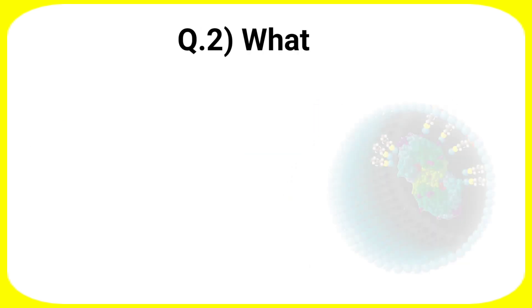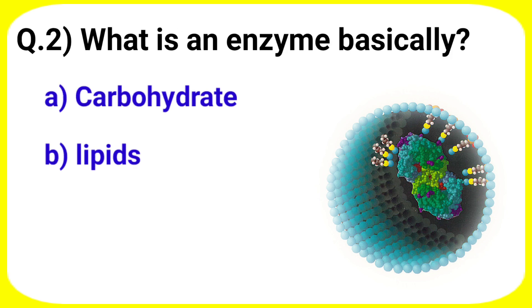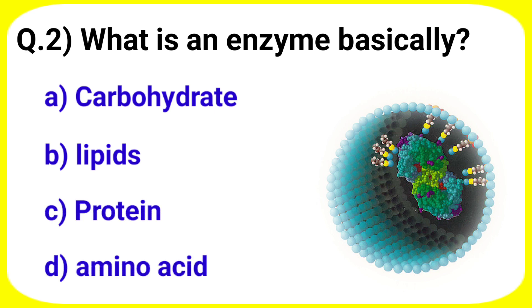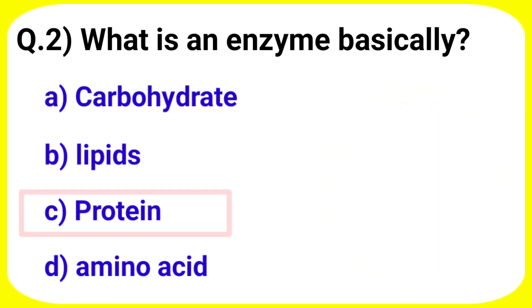Next question: What is an enzyme basically? Your options are A. Carbohydrate, B. Lipids, C. Protein, D. Amino acid. Answer is option C. Protein.